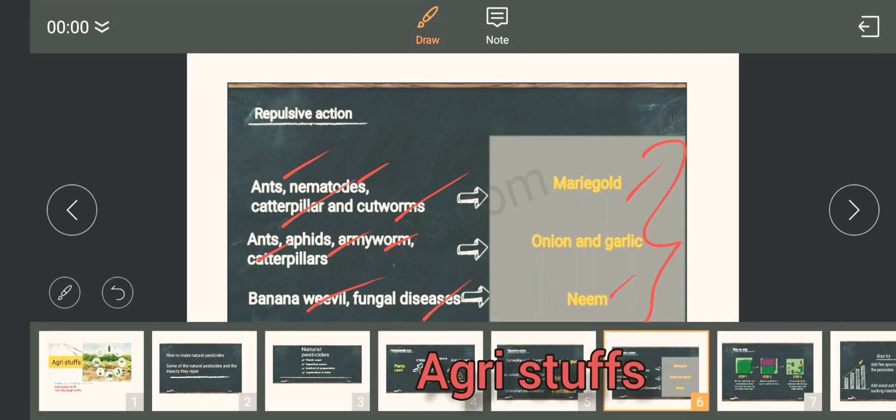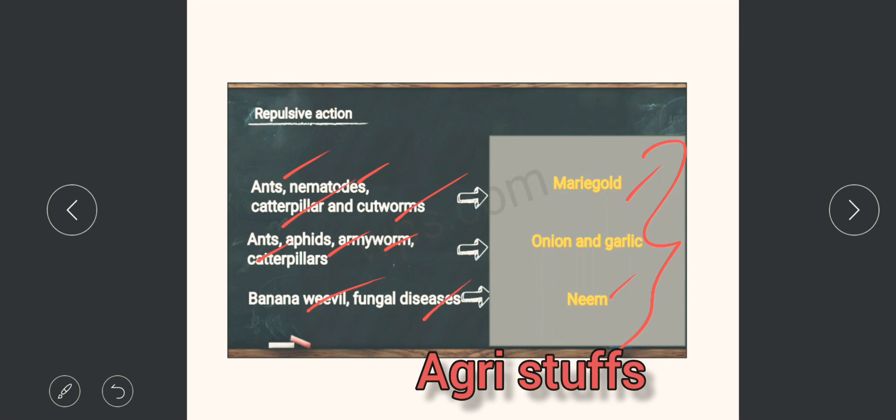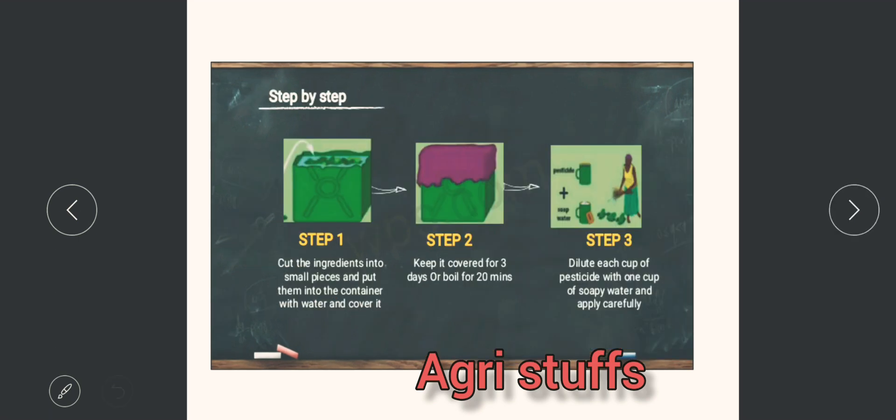Banana weevil and fungal diseases are controlled by neem. How to prepare this: Step 1 is cut the ingredients into small pieces and put them into the container with water and cover it.